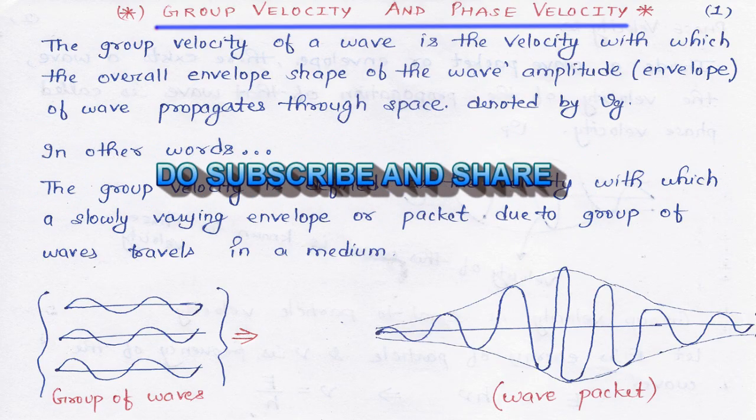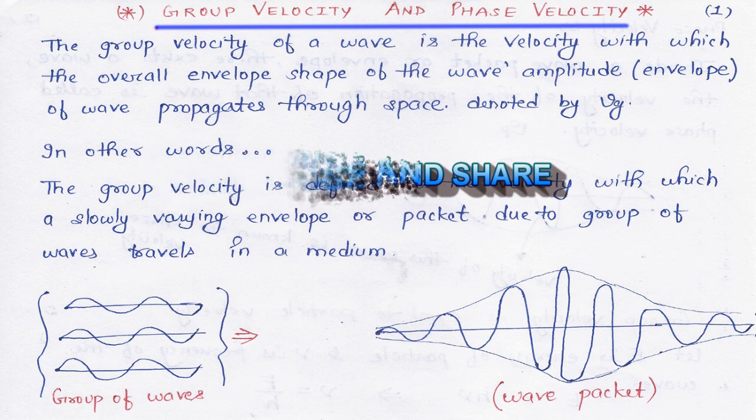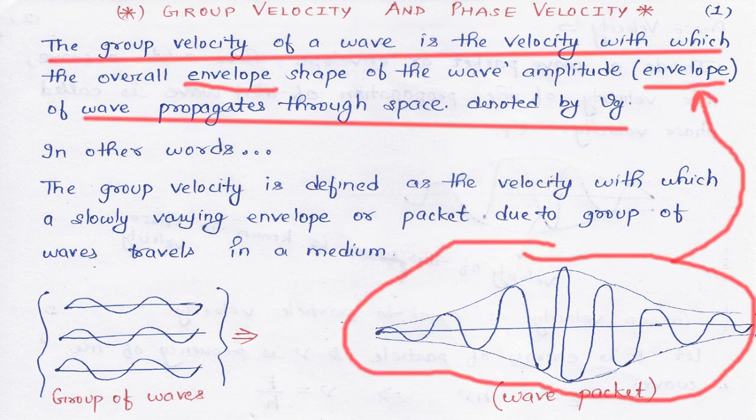Welcome to Monk and Parmanu. Today we are discussing our new topic: group velocity and phase velocity. Let's begin with the definition of group velocity. The group velocity of a wave is the velocity with which the overall envelope shape of wave amplitude, the envelope of the wave, propagates through space.